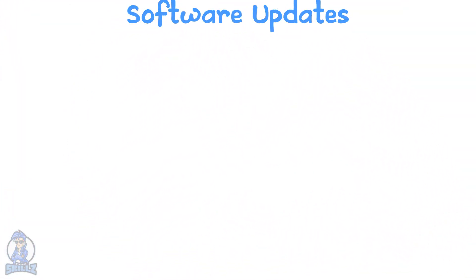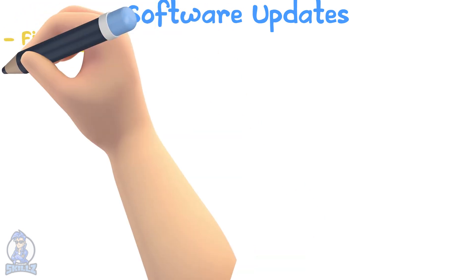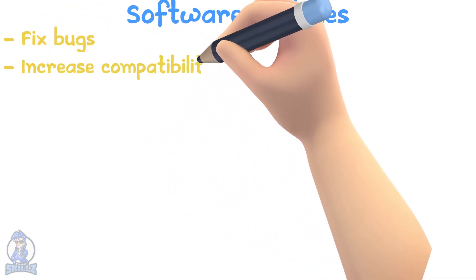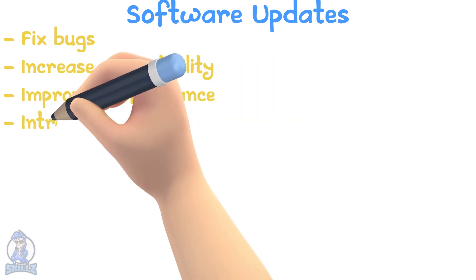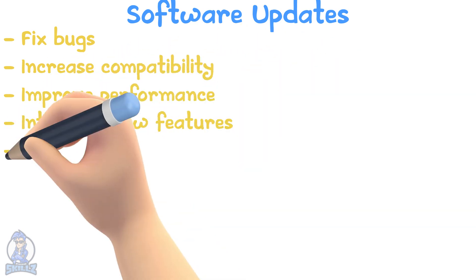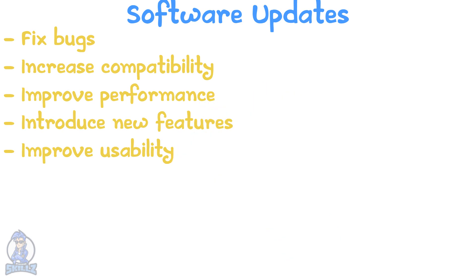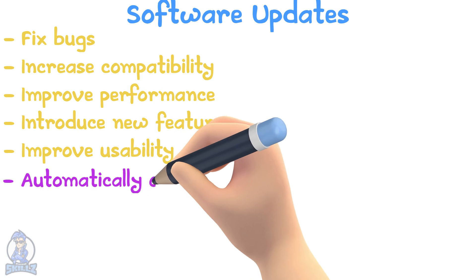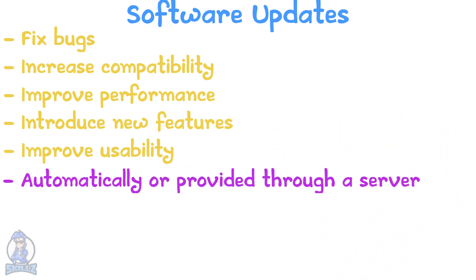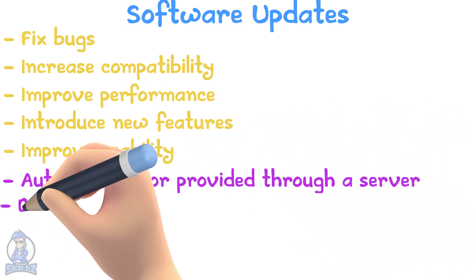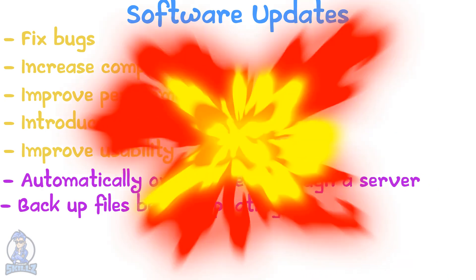Software updates. An update could be used to fix bugs, increase compatibility, improve performance, introduce new features, and improve usability. Some updates happen automatically, but most are made available through a server. Keep in mind to backup your files before updating, just in case something goes wrong.